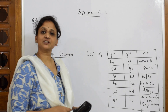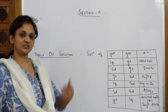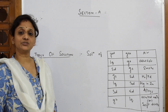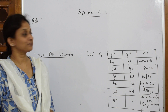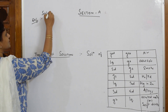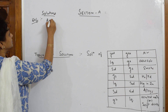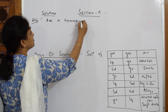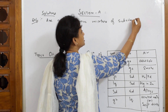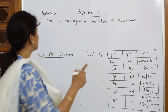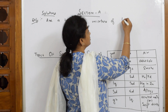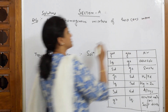Let us start with the first topic of the chapter. I divided the chapter into four subtopics: sections A, B, C, and D. In section A, we start with types of solutions and concentration units. The basic definition: solutions are a homogeneous mixture of two or more substances.